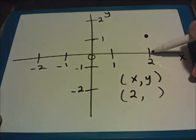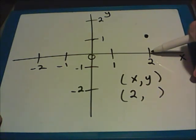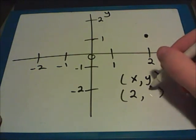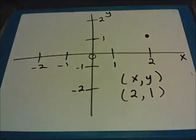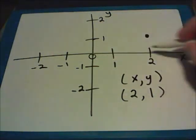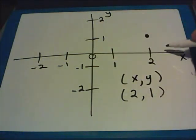Now from here, how far up or down along the Y line do we have to move? In this example, we only move up one space, so the Y value is one. This point is located at two comma one. Both of our numbers, X and Y, were positive because we moved right along the X line and up along the Y line.